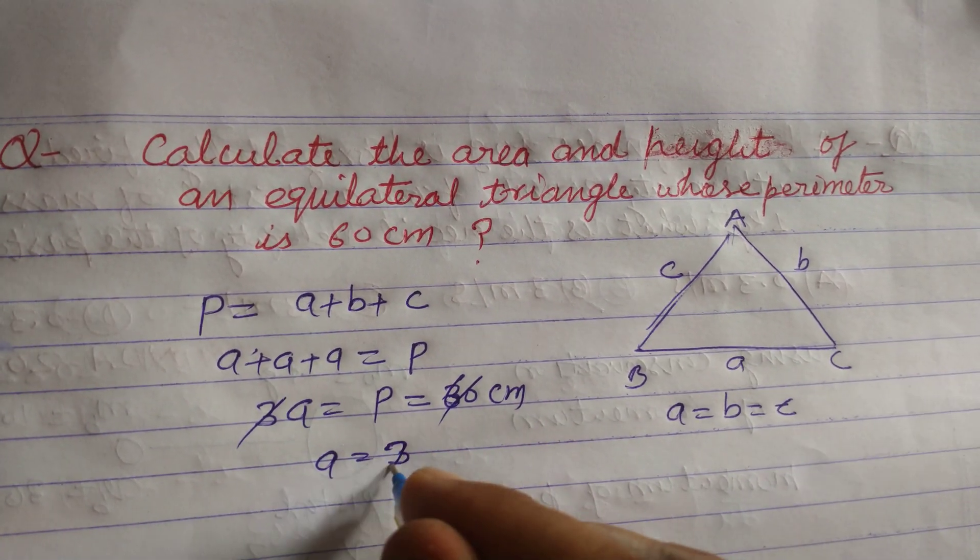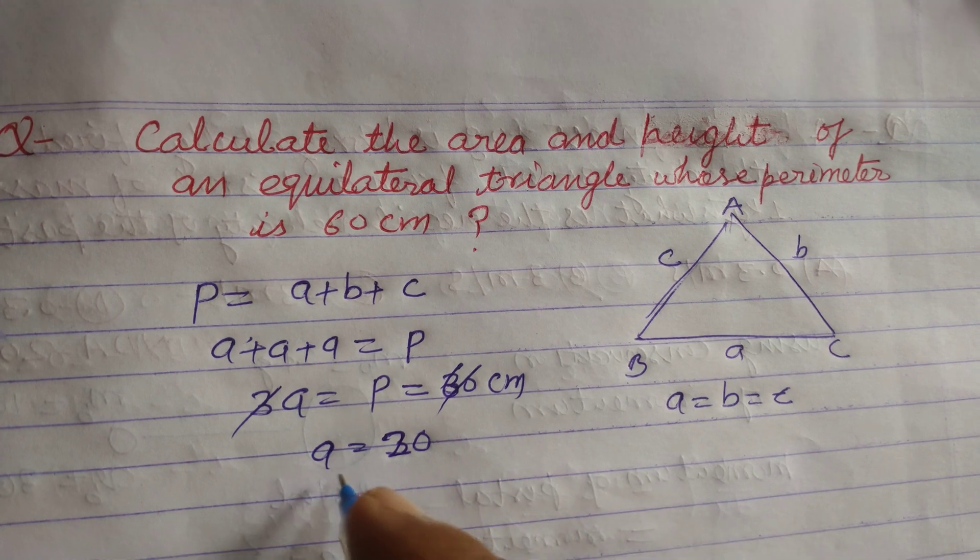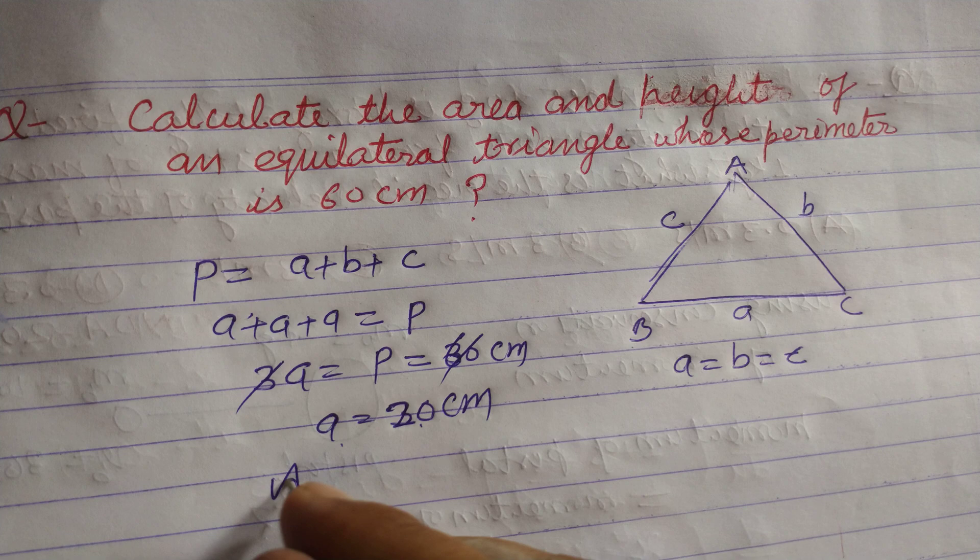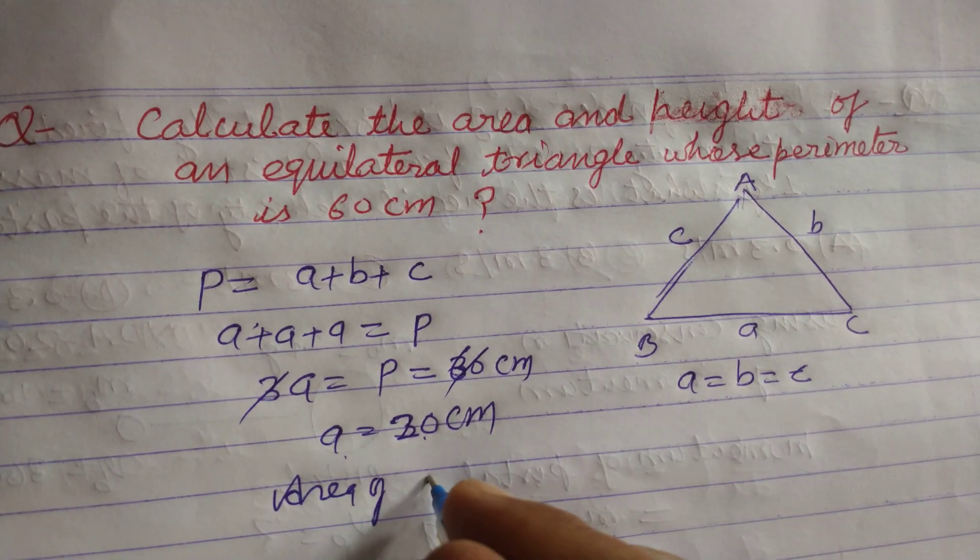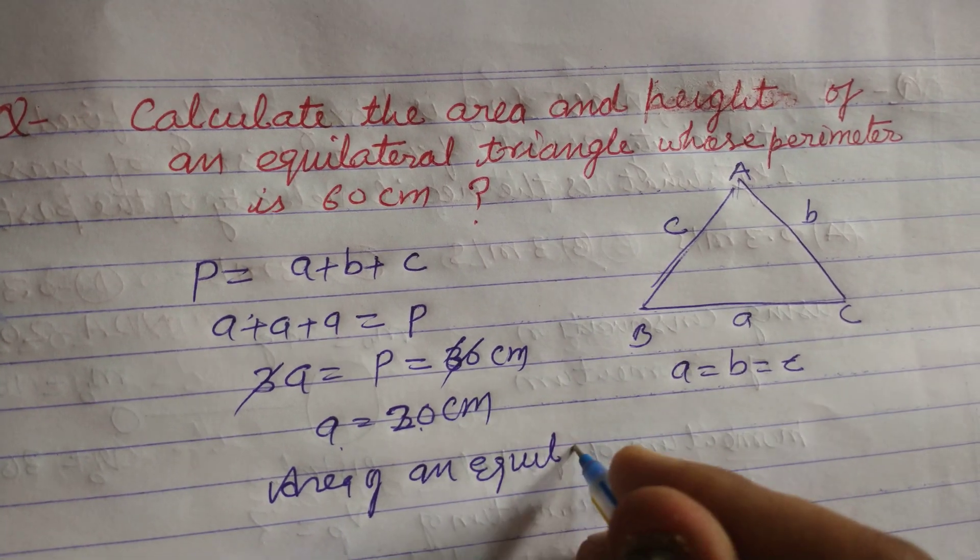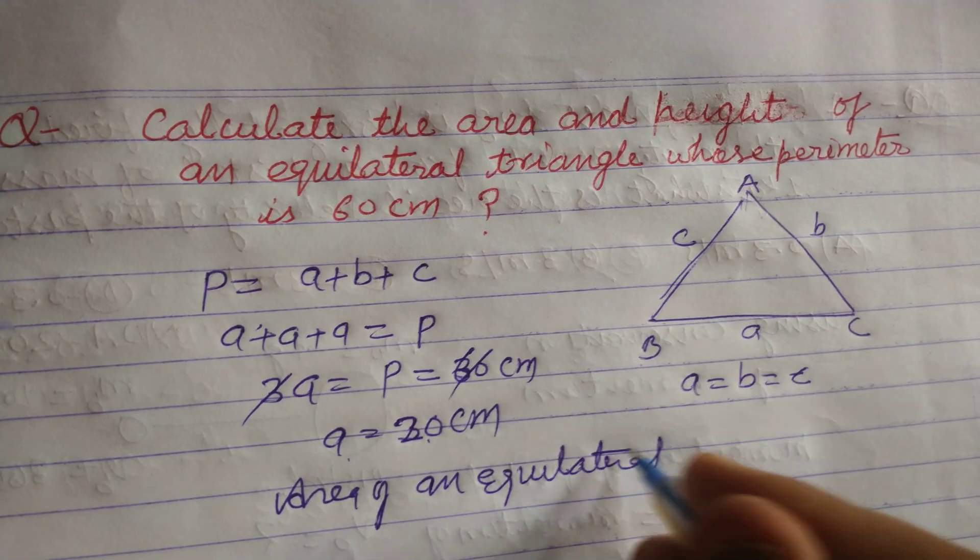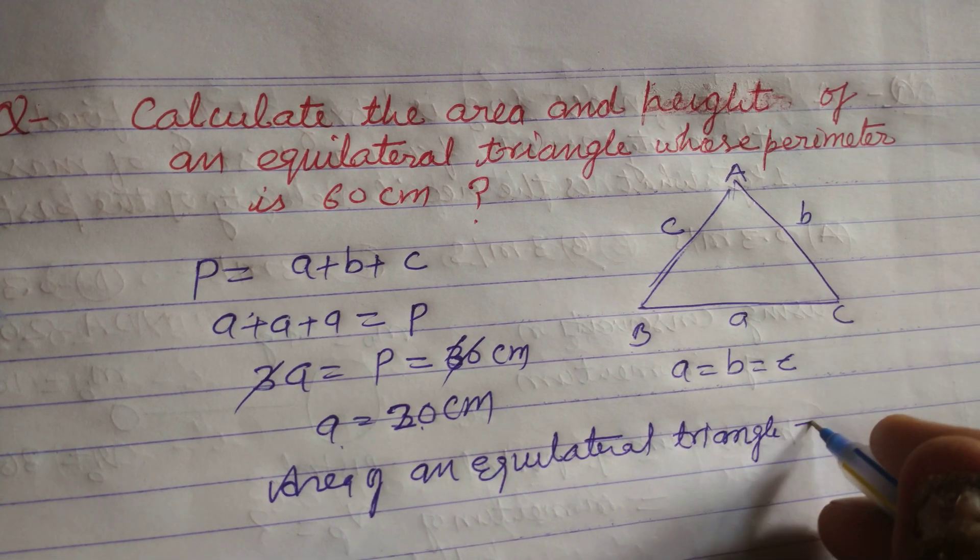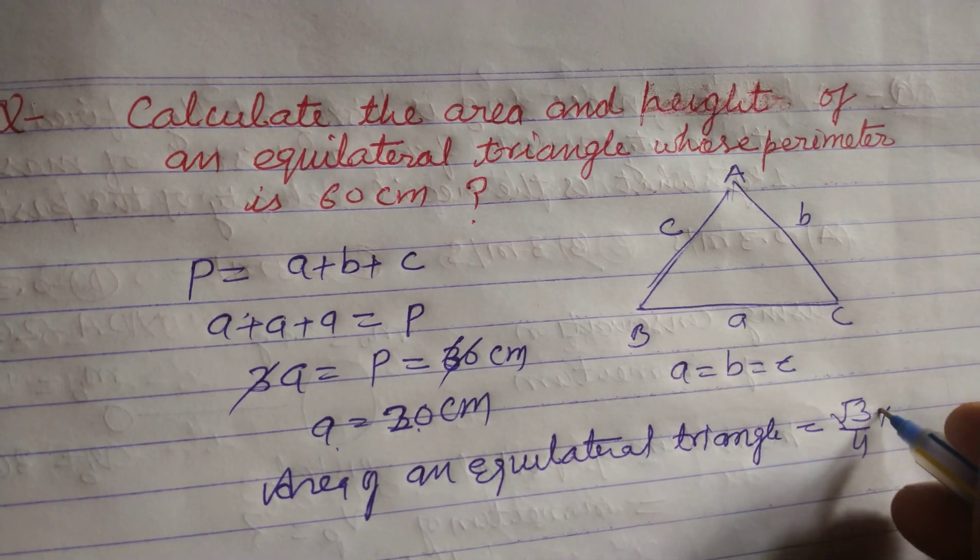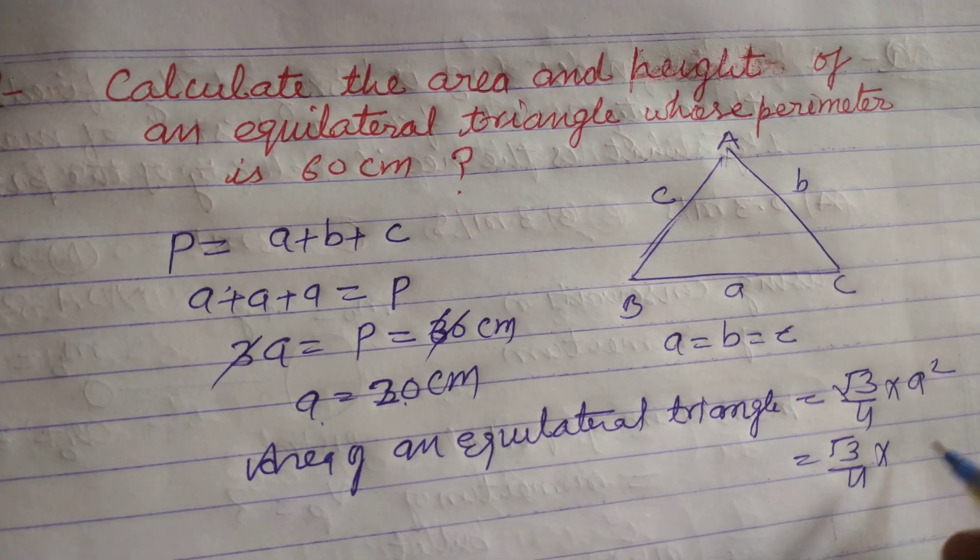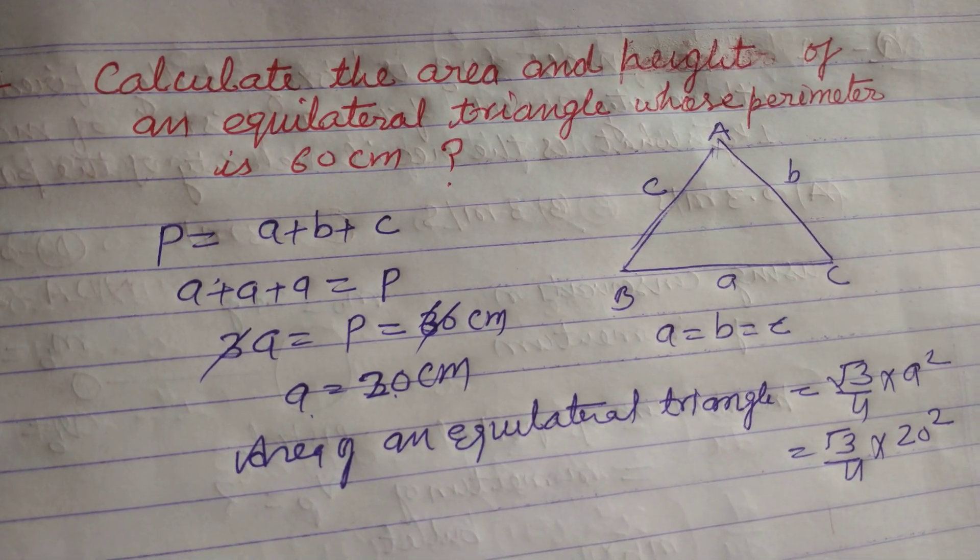Now area of an equilateral triangle is equal to square root 3 by 4 into side square. So this is square root 3 by 4 into side is 20 square.